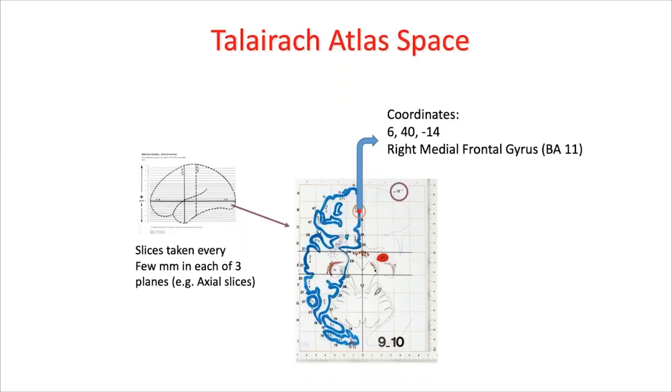You can find every single point in this coordinate system and use it for naming areas. The Talairach atlas does not have a map for every single cut — it was made approximately every three millimeters. So some coordinates require going to the nearest available level. Different atlases have different resolutions, so you may not find exactly the same coordinate in every atlas.